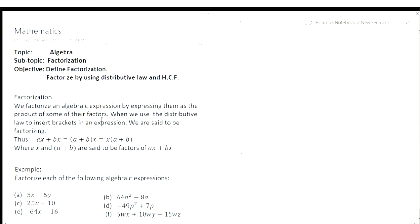So below that we have a definition for factorization. We factorize an algebraic expression by expressing them as a product of some of their factors. When we use distributive law to insert brackets in an expression, we are said to be factorizing. So thus, AX plus BX is equal to X open bracket A plus B close bracket, where X and (A plus B) are said to be factors of AX plus BX.